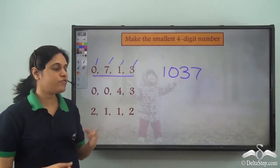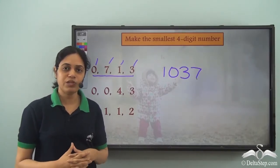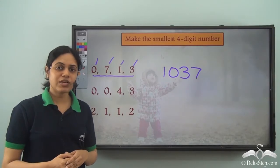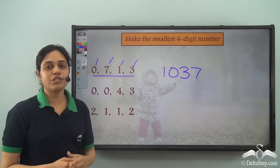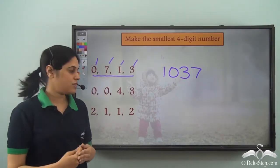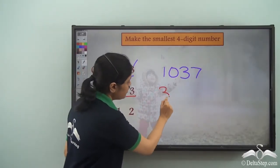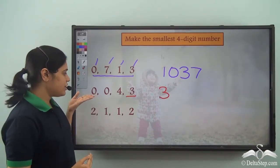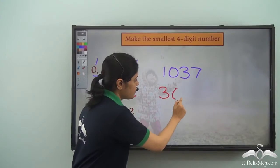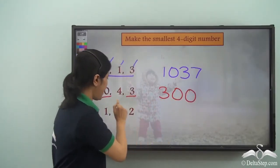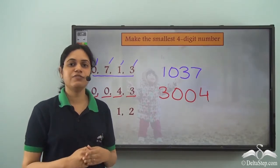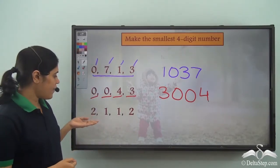What about digits 0, 0, 4, 3? There are two zeros. We don't write zero first since we need a four-digit number. So we start with the next digit, which is 3, then arrange the remaining digits 0, 0, and 4 in ascending order. So 3004 is the smallest four-digit number we can make using these digits.